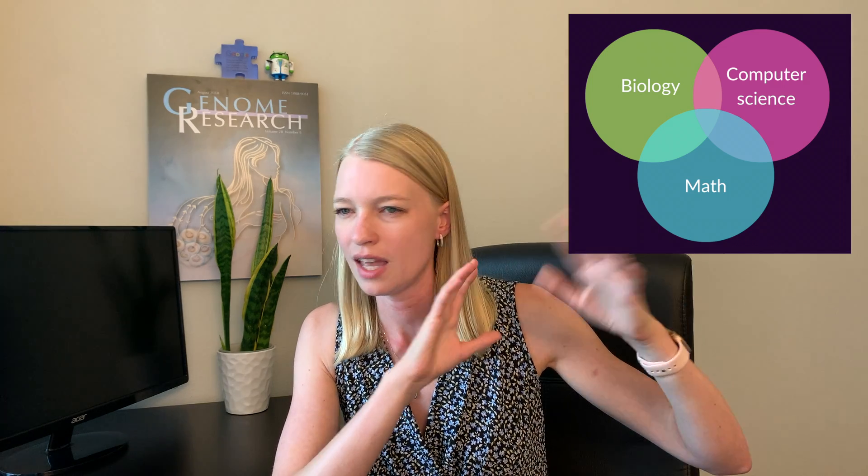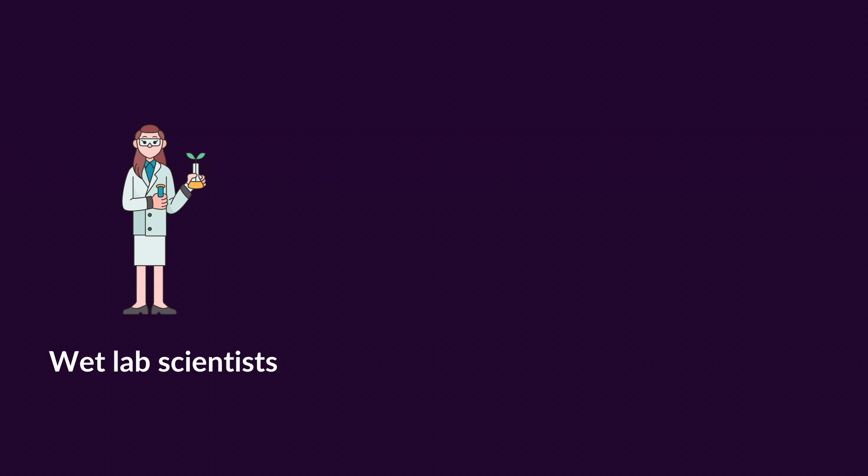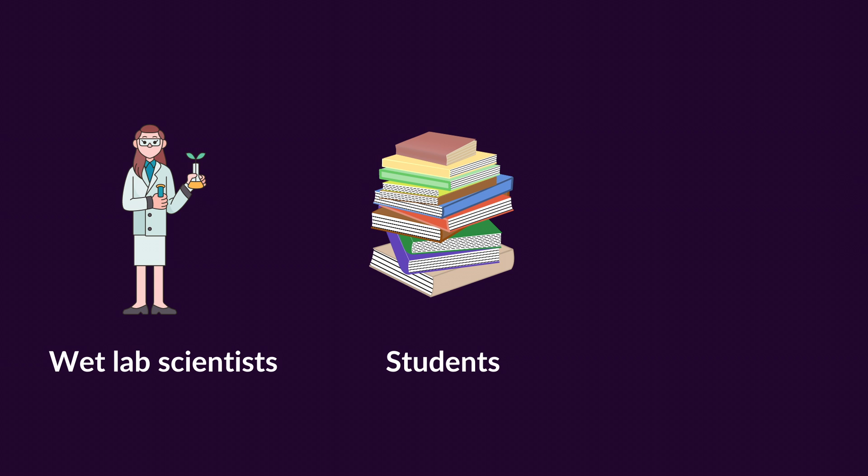We haven't covered any biology skills yet. The reason I focus on technical skills is because everybody is at a totally different place when it comes to biology. Some of you are wet lab scientists who've been doing experiments for years, or you're solidly in some field of biology already and just need the technical, practical skills to analyze your own data. Another group might be starting out in bioinformatics, still in school, still taking courses, and going to end up developing algorithms with lots of room to grow and choose an area of biology to focus on.